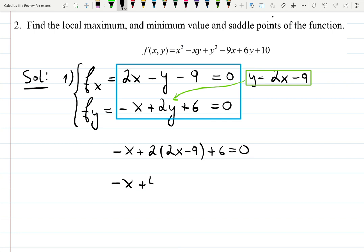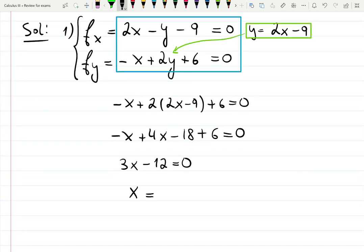Simplify. 4x minus 18 plus 6 equals 0. Simplify more. So 3x minus 12 equals 0. Simplify more. 3x equals 12. x is 4. Nice.